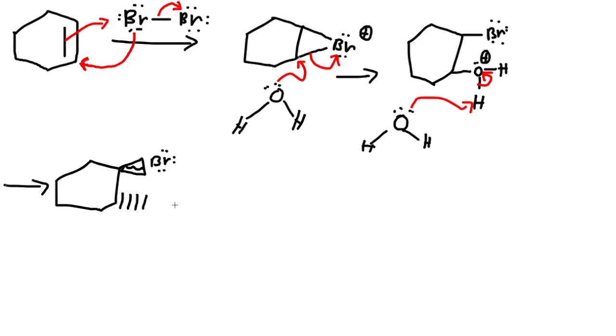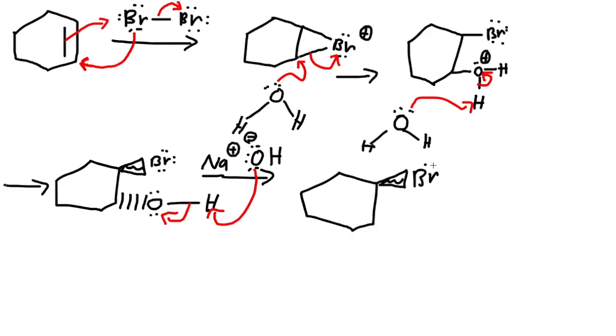Now we have the NaOH comes in as another reagent. OH with a negative charge comes in, grabs the hydrogen, kicks off electrons to oxygen. Now we have bromine on the wedge. Oxygen has a negative charge, so this attacks now the carbon where the bromine is on, and kicks off the bromine.